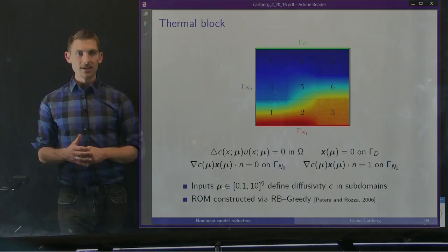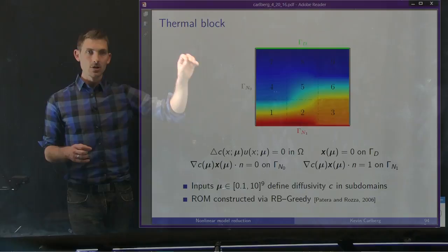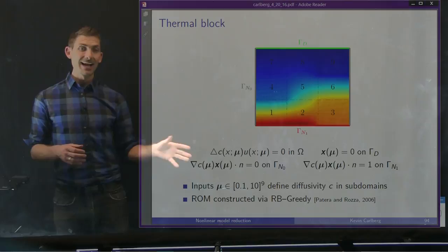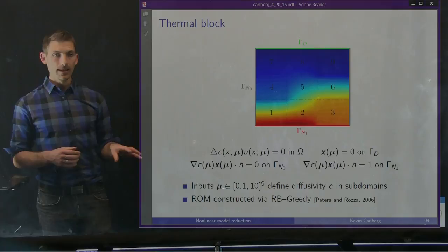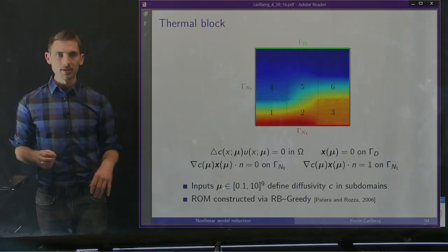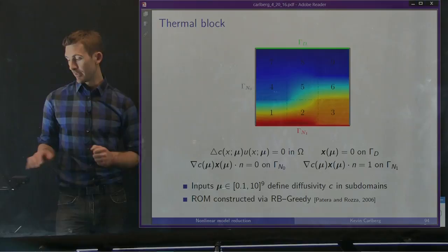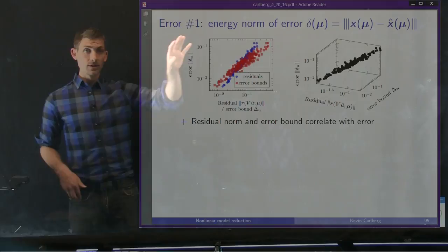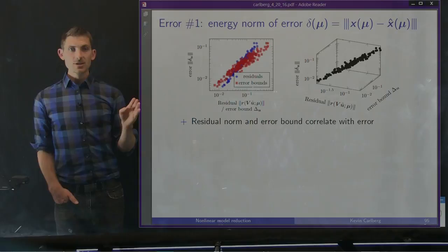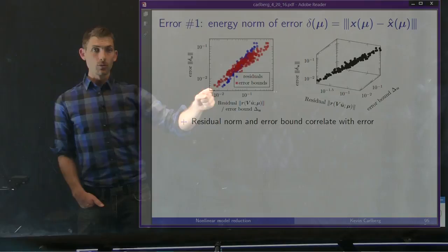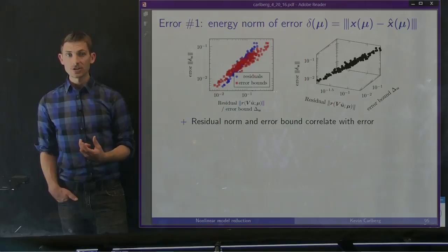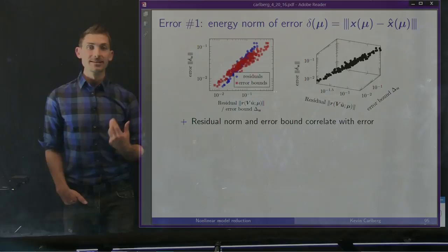Let's look at how this method works on a simple thermal block problem — solving a Poisson equation in two dimensions over nine subdomains, each characterized by its own conductivity constant, giving a nine-dimensional parameter space with conductivities varying from 0.1 to 10. We build a ROM using the RB greedy method proposed by Paderet and Rosa. Considering the energy norm of the state-space error, if we plot it over a training set with the indicator being either the error bound in red or the dual norm of the residual, we get a very good correlation structure.